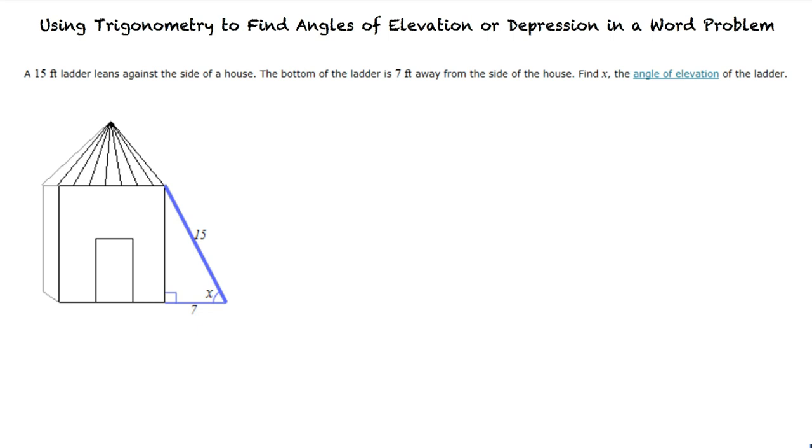Since we want to find the angle measurement and we know the length of the adjacent side and the hypotenuse, we can set up a cosine equation. That's right. From here, we can substitute in our known values.